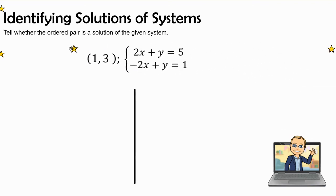Let's go ahead and pull out the next one. Is (1,3), the ordered pair (1,3), is it a solution of this system? So let's check it out. First things first, let's write both equations out: 2x + y = 5, and -2x + y = 1.